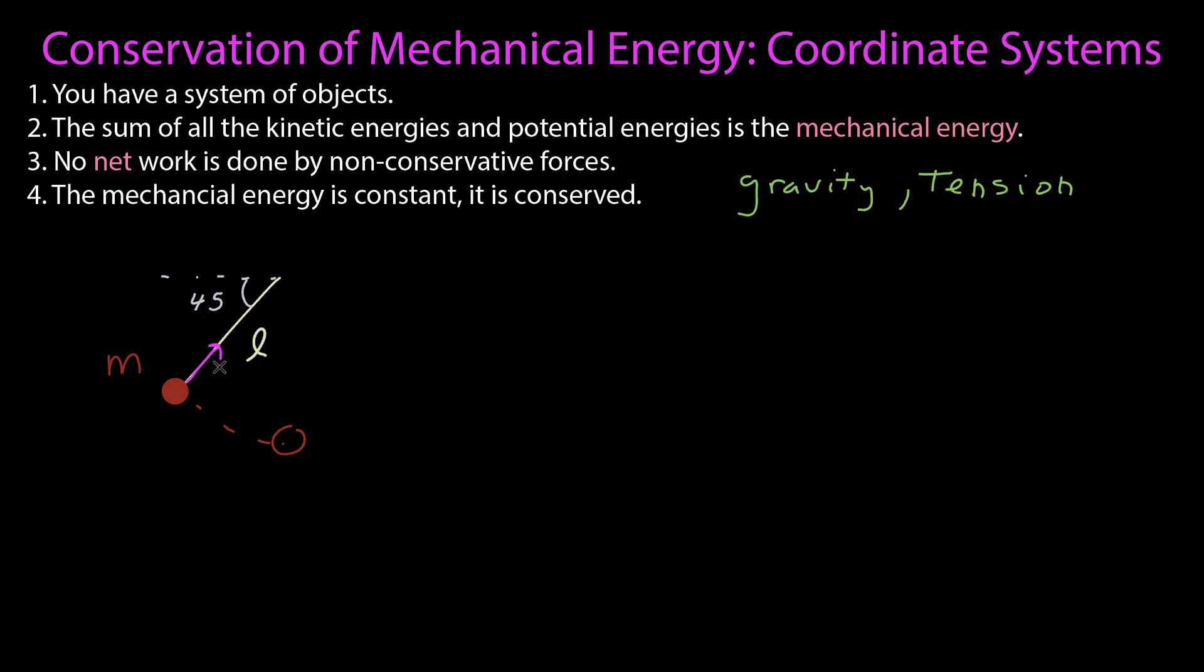Does that mean mechanical energy is not conserved? No, because the tension is always acting perpendicular to the velocity. At this point, the velocity is tangent to the arc, while the tension is perpendicular to the arc. When it reaches the bottom, the tangent is pointing that direction, while the velocity is that direction. So at each point in time, the tension is perpendicular to the velocity, so it never does any work on the system. So there's no net work done by non-conservative forces. That means the mechanical energy is constant and conserved.